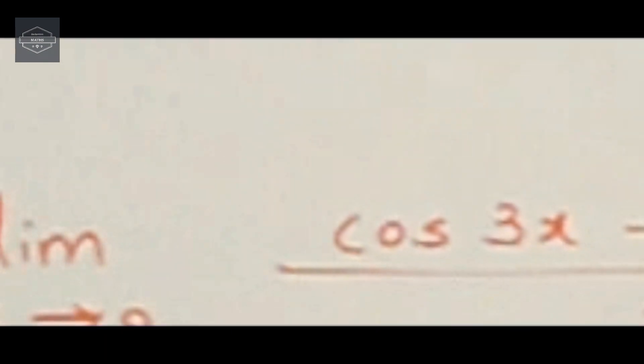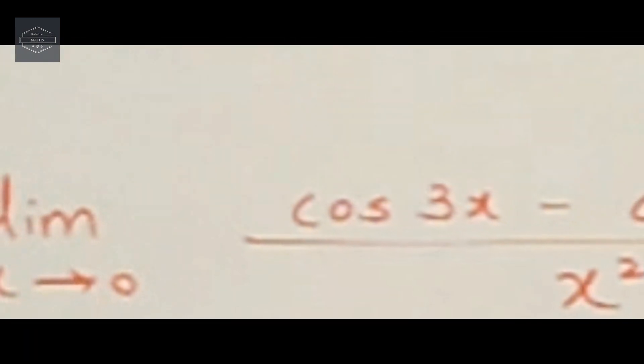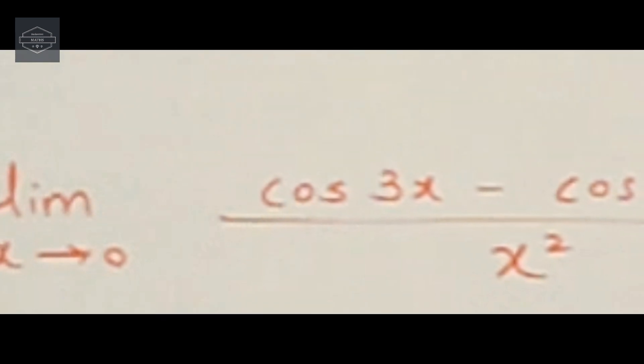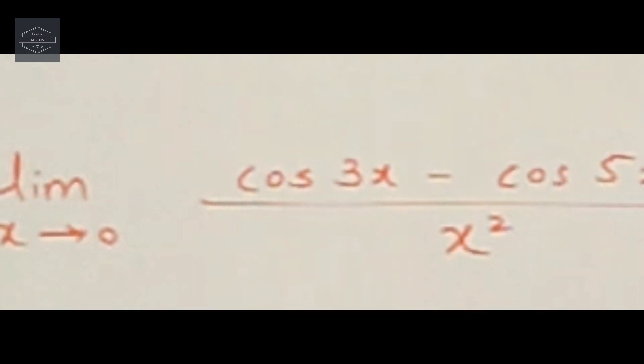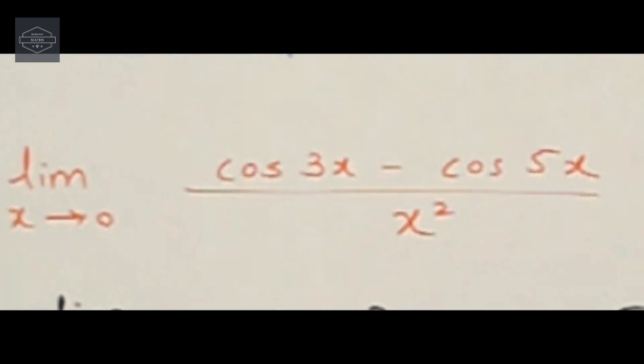Alright, so here we go. Now before we understand the shortcut, let me show you one example which says limit x tends to 0, cos 3x minus cos 5x upon x squared.